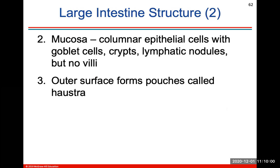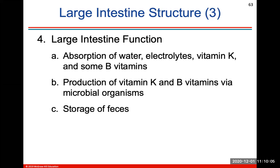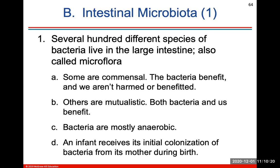The outer surface of the large intestine forms pouches called haustra. The large intestine's main functions are to absorb water, electrolytes, vitamin K, and some vitamin B. Production of vitamin K and B vitamins is via microbial organisms. A big function is also to store feces. You have many intestinal microbes called microflora — these bacteria are mostly anaerobic, and they help keep us unharmed from all the waste passing through. An infant will receive its initial colonization of bacteria from its mother during birth.